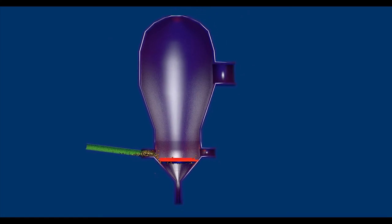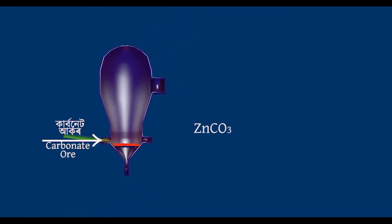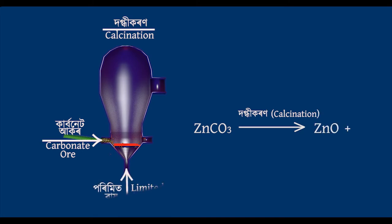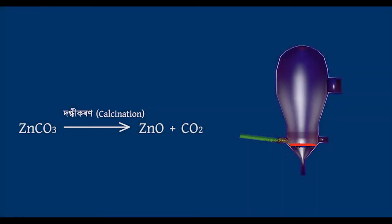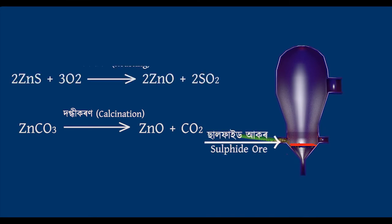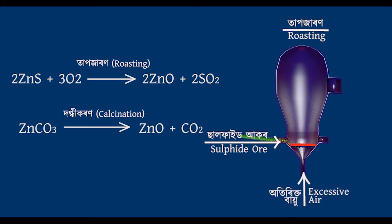Remember, the carbonate ores are separated by calcination process when reduction is carried out in the presence of a limited supply of air. On the other hand, the sulfide ores are separated by roasting, that is, the ores are heated to a definite temperature in the presence of excess air.